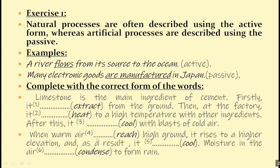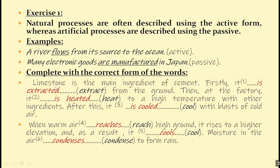Okay, let's take a look at the answers. This is an artificial process — limestone is the main ingredient of cement. We're talking about the production of cement, and cement is not produced naturally in the environment. Human beings have to be involved. Because it's an artificial process, we're going to use the passive. So: firstly, it's extracted from the ground. Then at the factory, it's heated to a high temperature with other ingredients. After that, it's cooled with blasts of cold air.